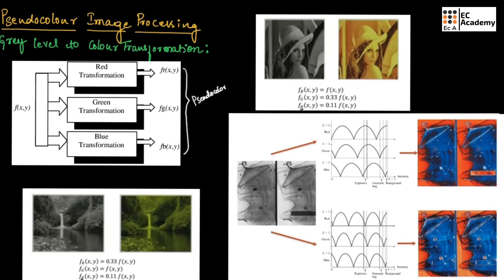This is how the pseudo color image is obtained. Similarly, here is one more transformation where the explosive as well as the garment in the bag should appear in blue color compared to the other two colors. Here the value of the blue channel is higher, so the garment and the explosive both appear as blue. The background, as you can see, has a higher red value compared to the other two, so the background appears as red color.